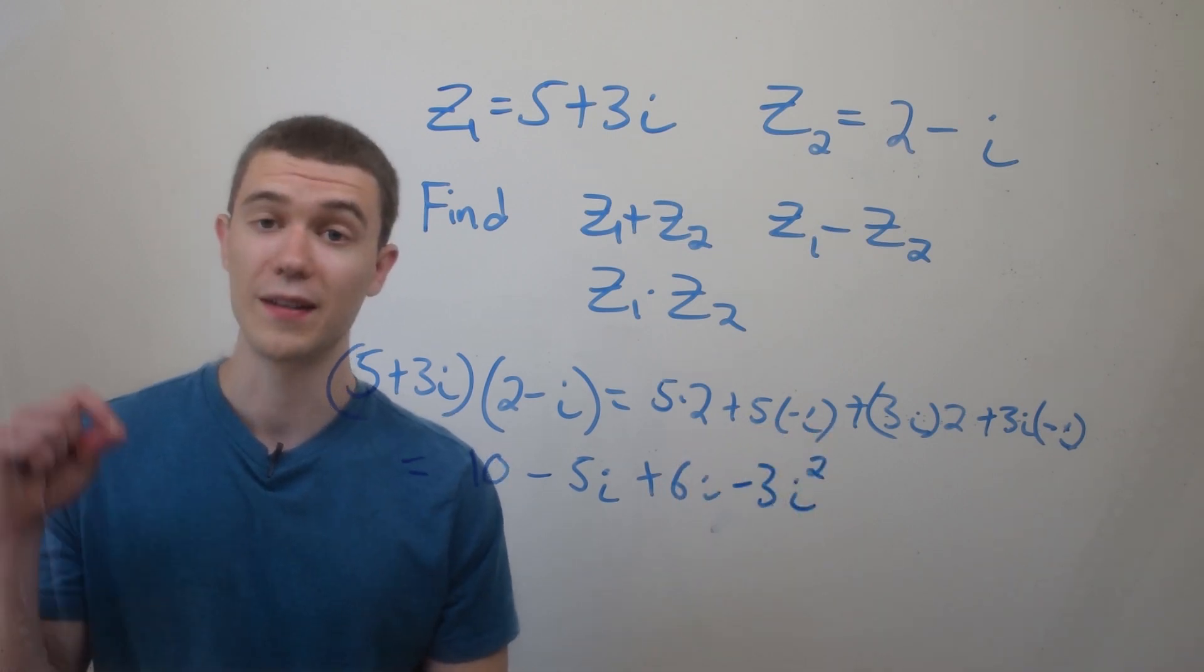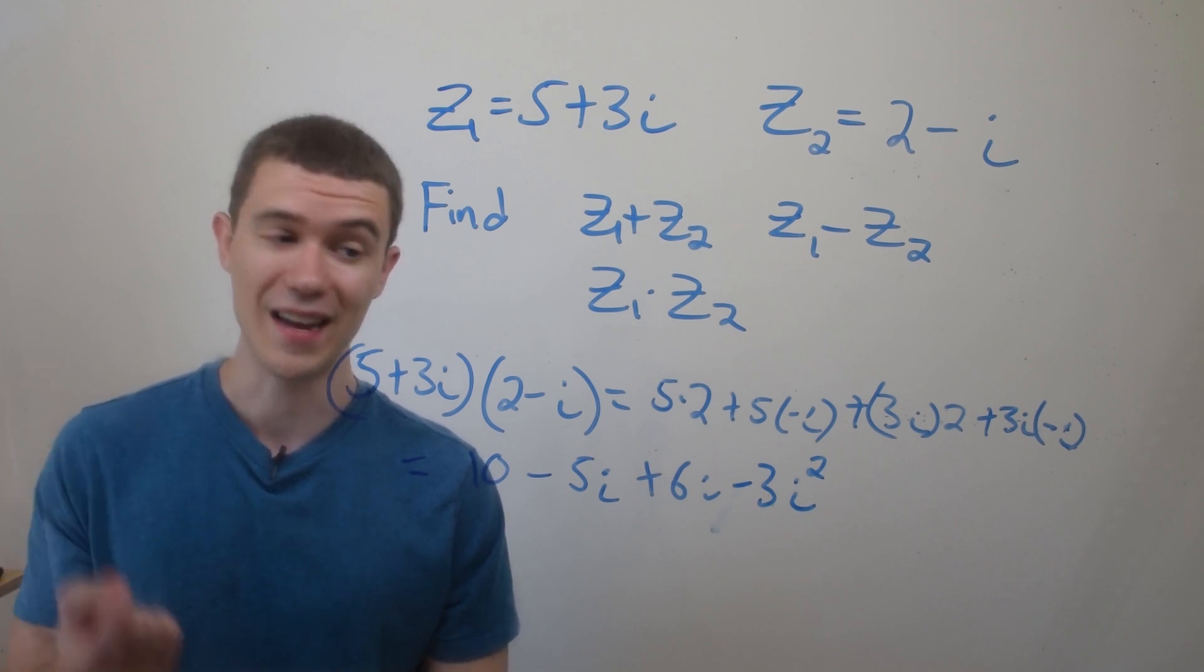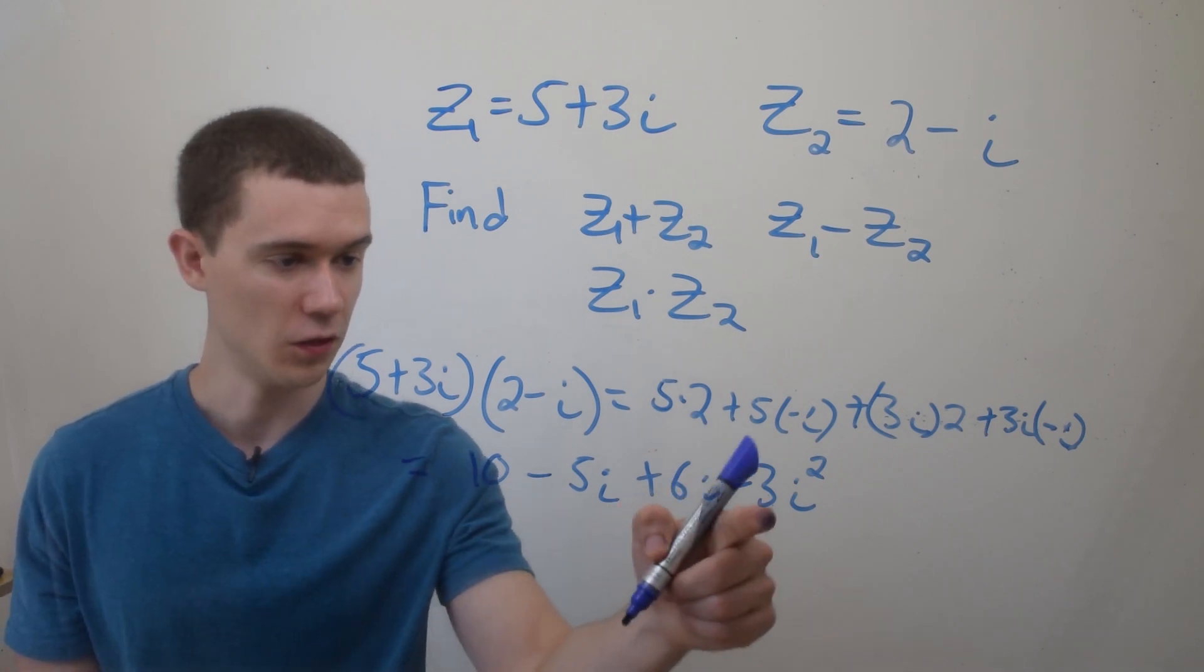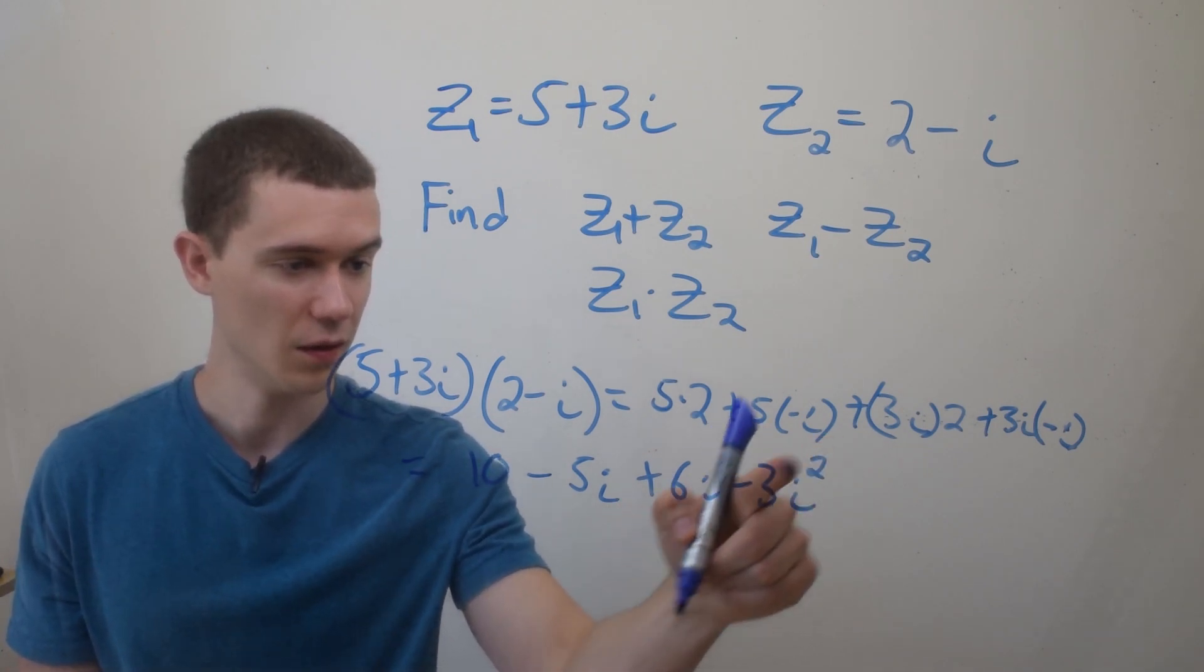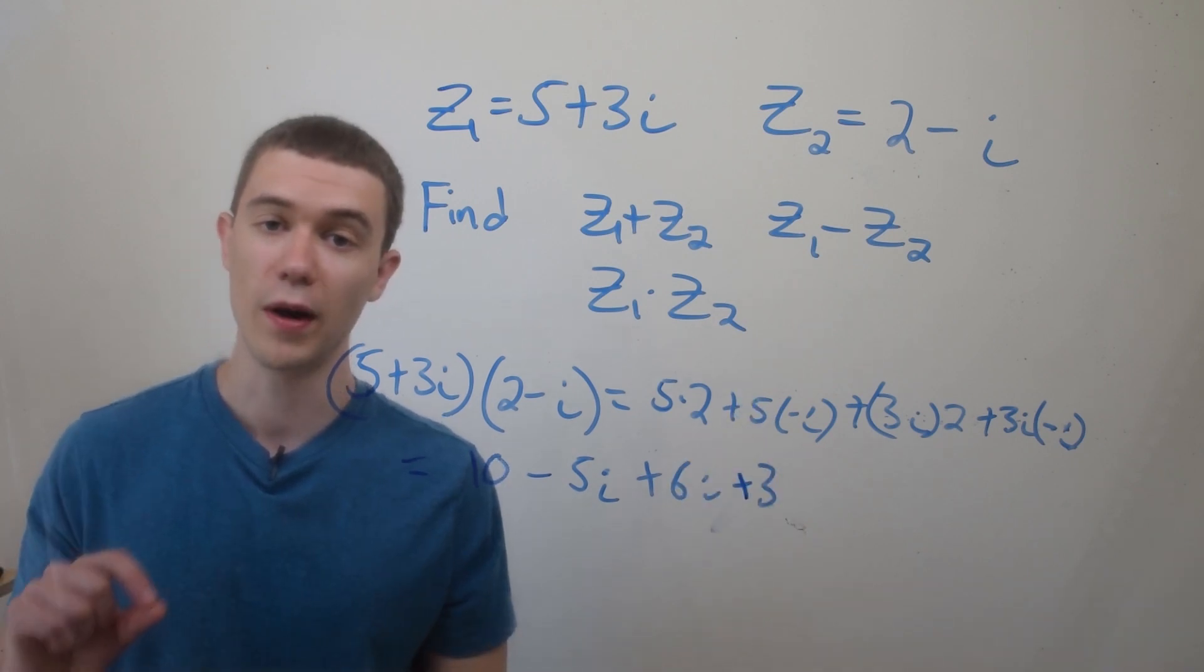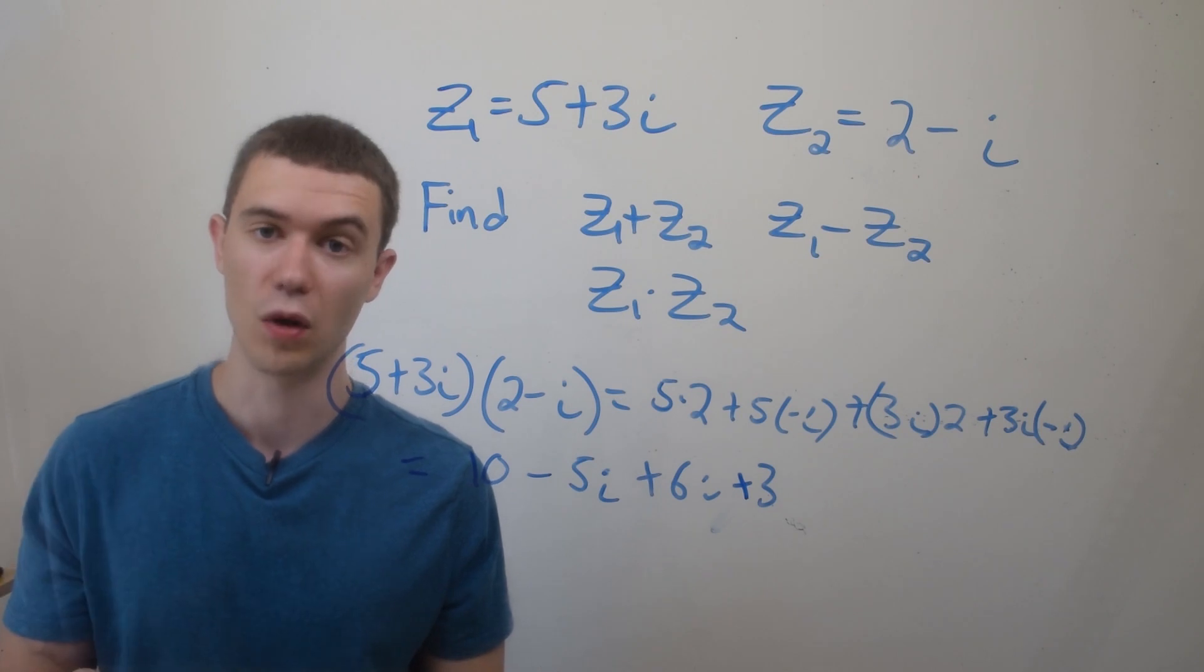Now if you remember back to the last video, since i squared is negative 1, I'll replace that here. So this is actually not minus 3i squared, but plus 3. So anytime we see i squared, we're just going to replace that with a negative 1.